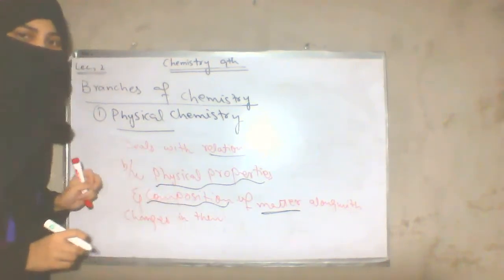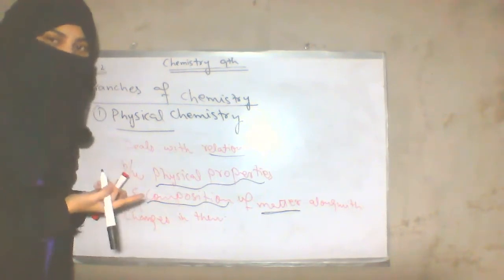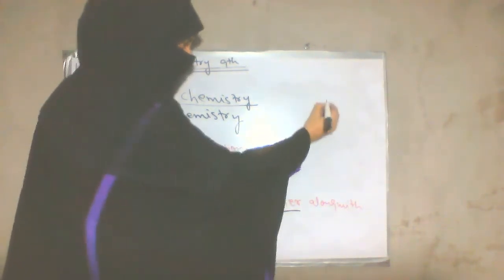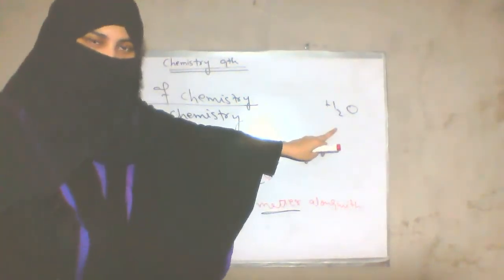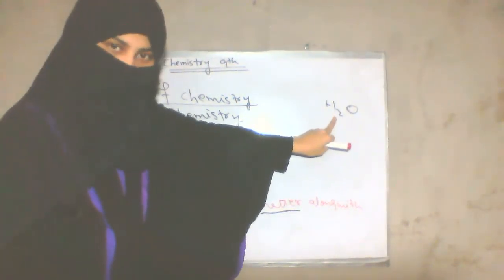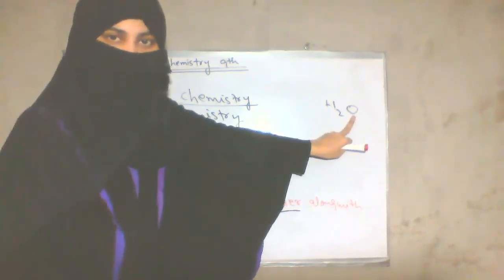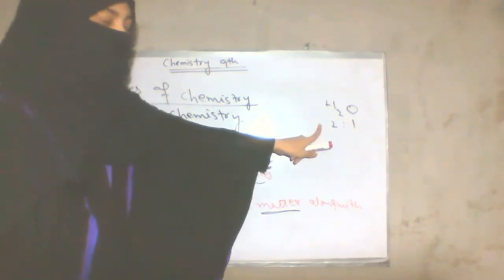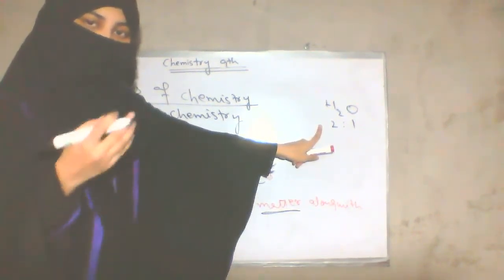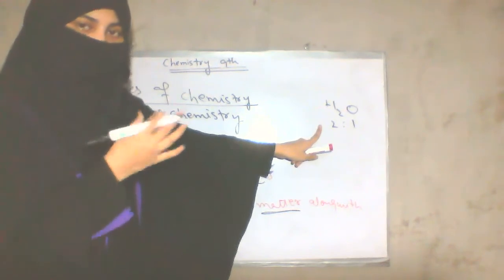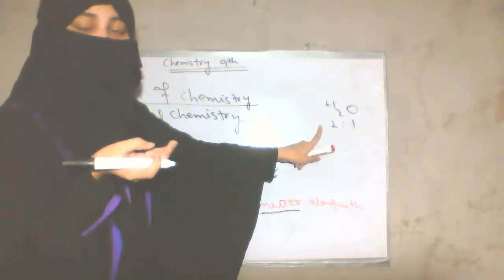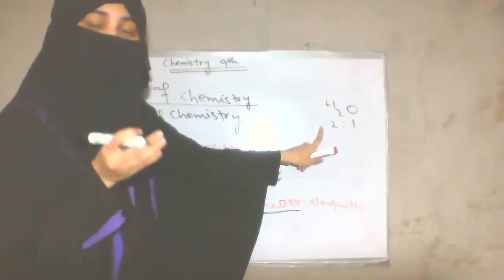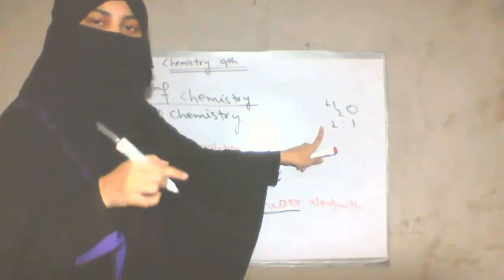Let's take an example. Let's consider water as a matter. You have water. The composition of it has two hydrogen atoms and one oxygen atom. What is the composition of it? Then its physical properties — if you know water, its texture, taste, melting point, boiling point, and freezing point will be determined.